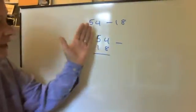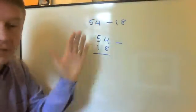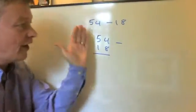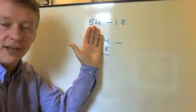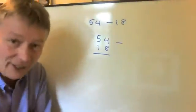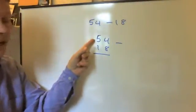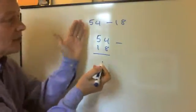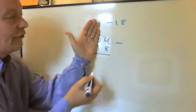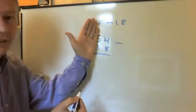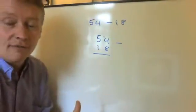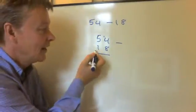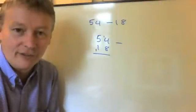And then what we say is that we have 4 units take away 8 units. Well, I can't do that. If I have 4 sweets and I want to take 8 sweets away, I can't do that. And the way I do that is I say, well, I'm going to make that 14, but because I've borrowed a library book, I have to give my library book back. And the way I do that is I put it back onto the shelf.